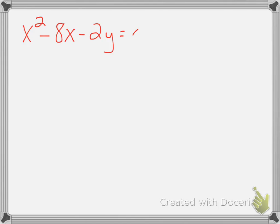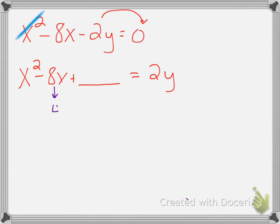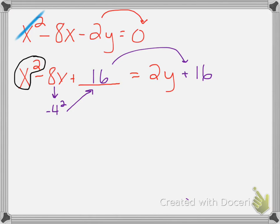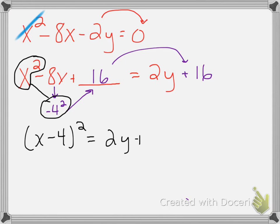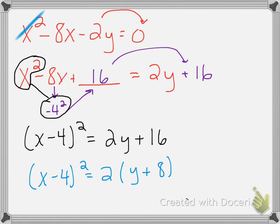A parabola is similar, except we only have one squared term. Get it and its like term on the left side and move everything else. When we move everything, the negative 2y becomes positive. Complete the square the same way: take half of negative 8x, which is negative 4, square it to get 16, and add it to both sides. Combine the squared terms to get x minus 4 squared equals 2y plus 16. Then factor out the 2 from both terms on the right: 2 divided by 2 is 1 and 16 divided by 2 is 8, giving y plus 8. Now you have your equation.